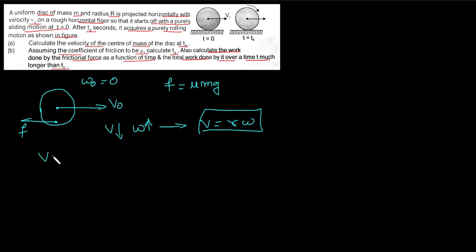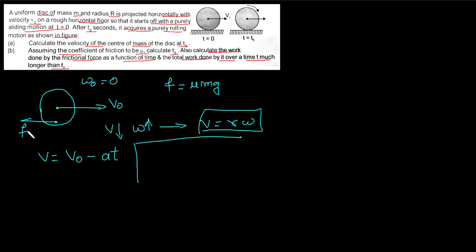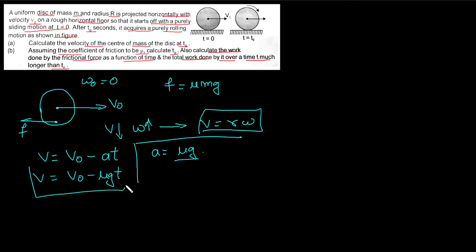Now, what is v? Using equation of motion, v = v₀ + at. Here, the friction force acts in the backward direction, giving a deceleration. So the linear velocity is: v = v₀ - μg·t.